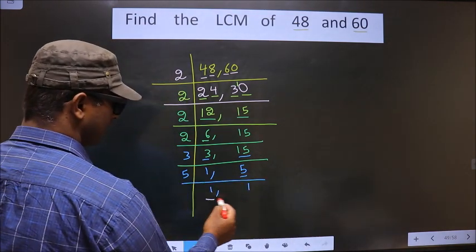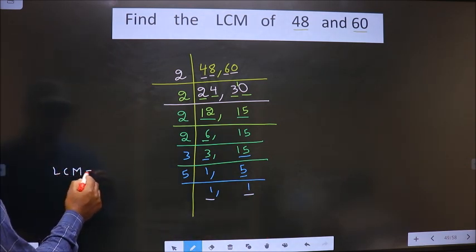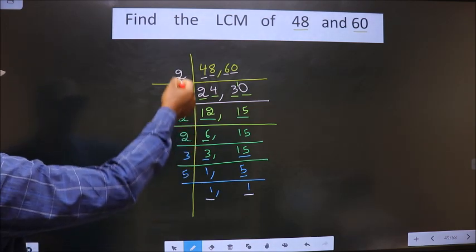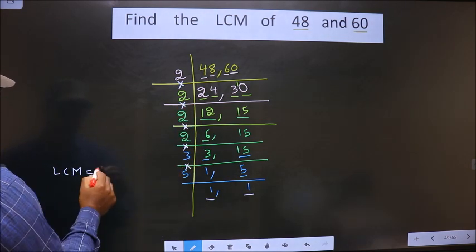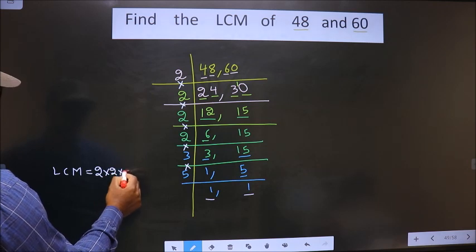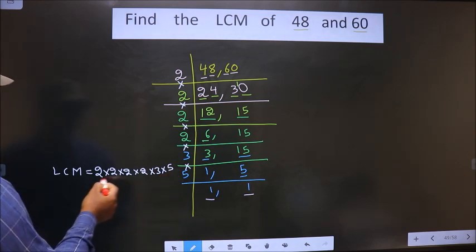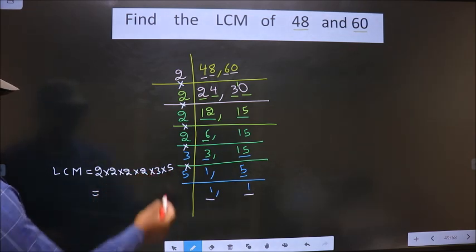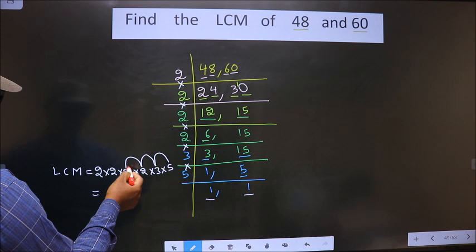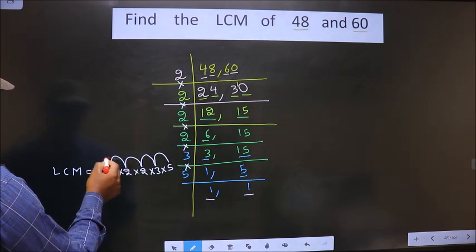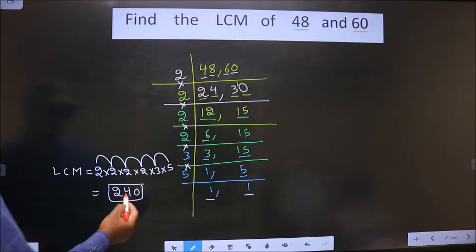Now we got 1 in both places. So our LCM is the product of these numbers: 2 × 2 × 2 × 2 × 2 × 3 × 5. Let us multiply all these numbers. 5 × 3 = 15. 15 × 2 = 30. 30 × 2 = 60. 60 × 2 = 120. 120 × 2 = 240. So 240 is our answer.